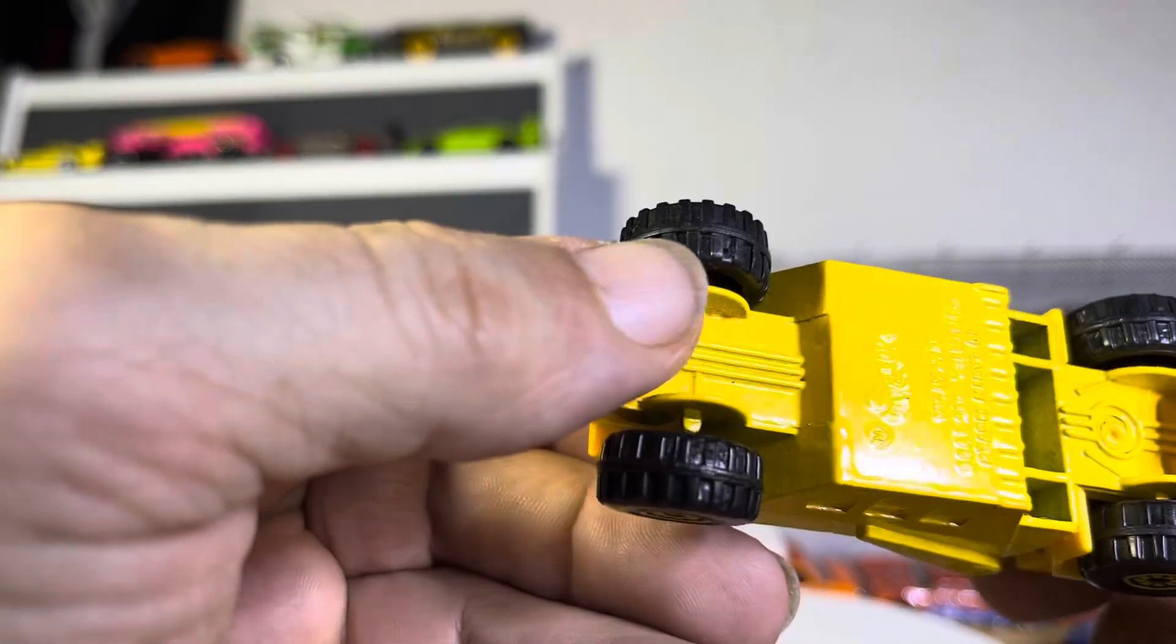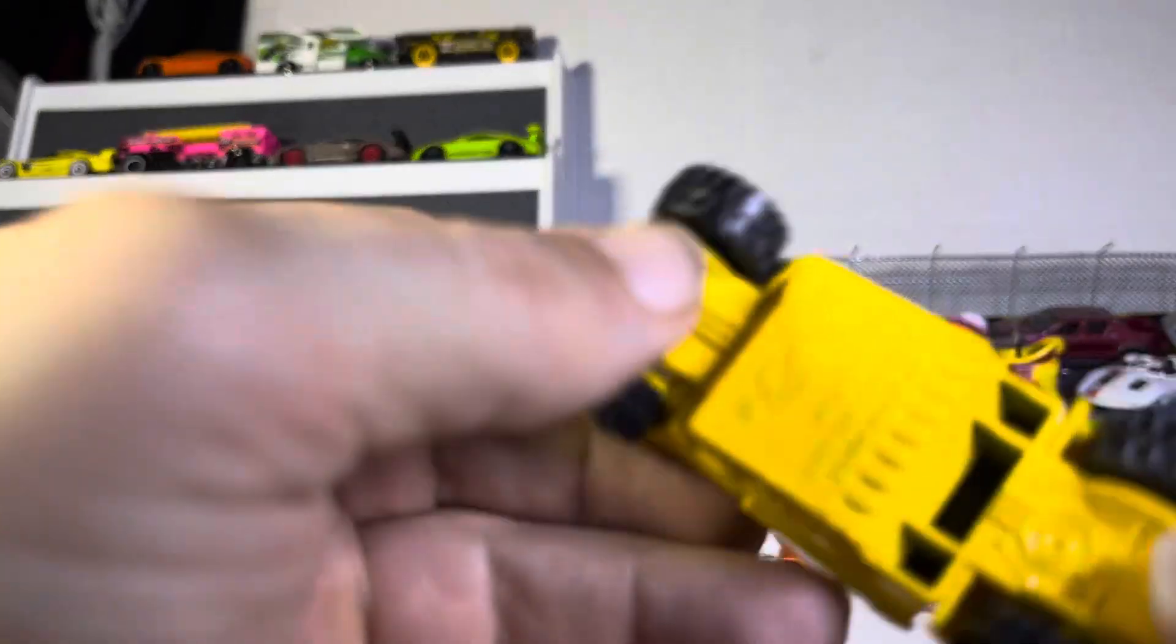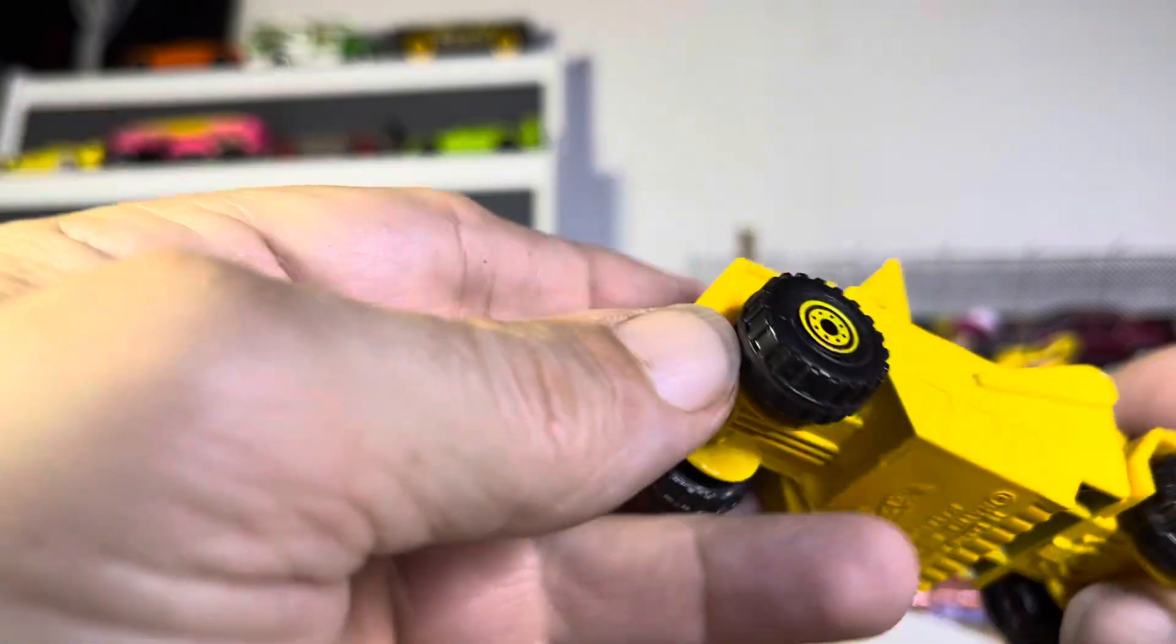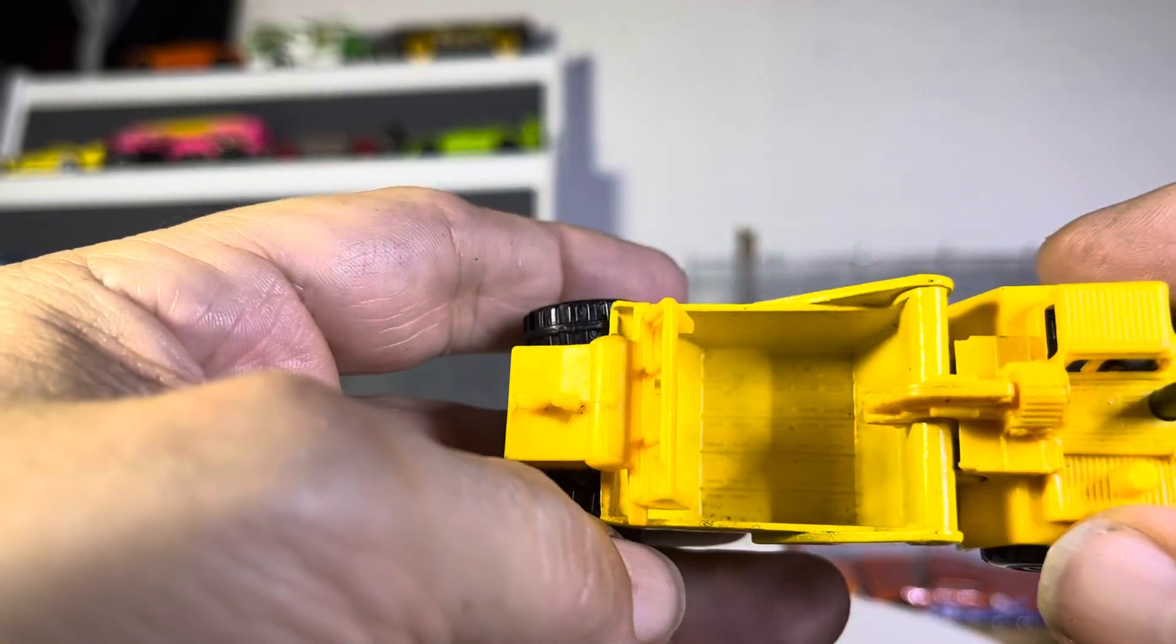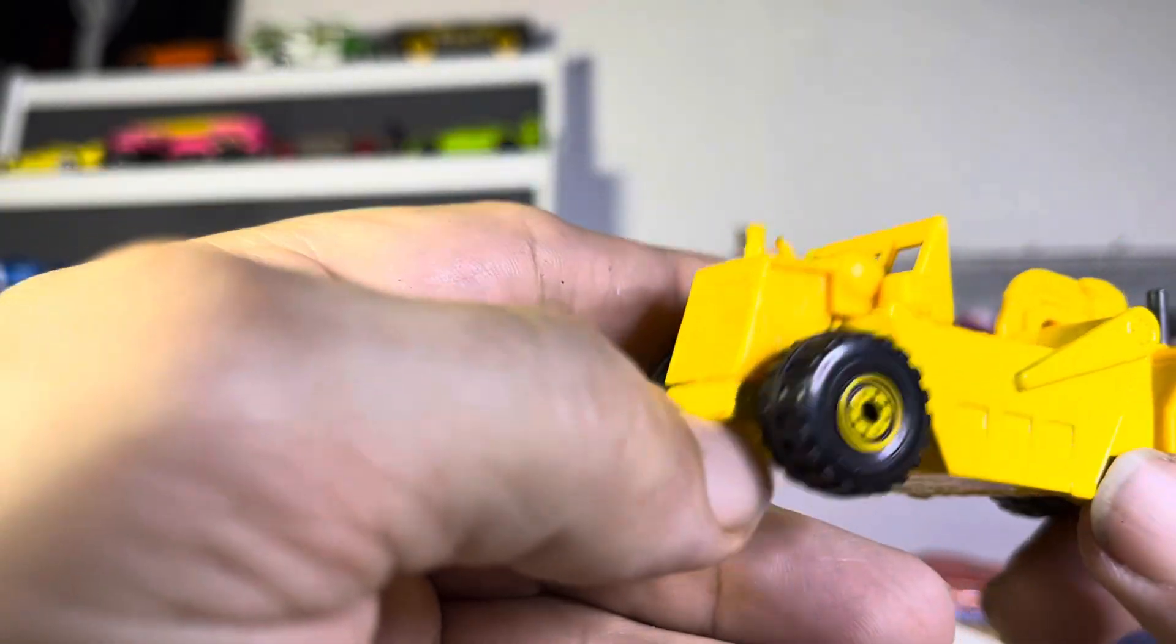Alright guys, another thrift store find, and it is a Hot Wheels. I don't think anything moves. This piece looks like it might move, but it doesn't, and it looks like a road grader.